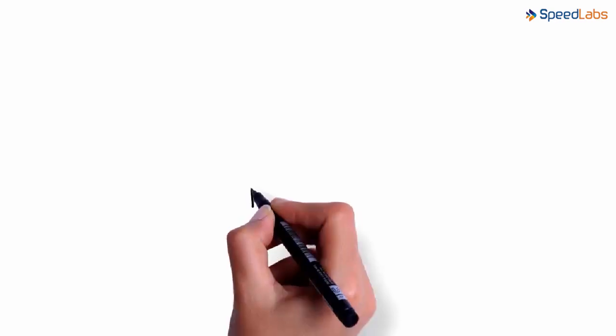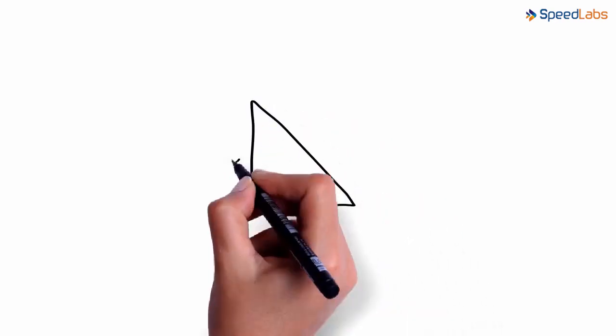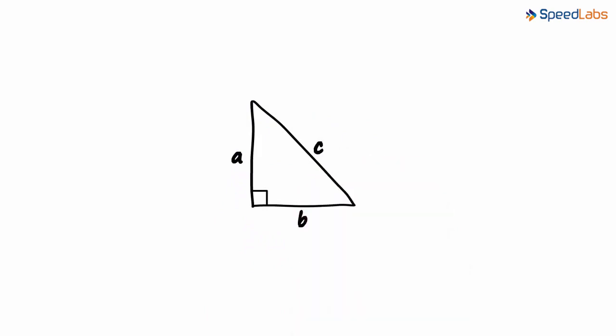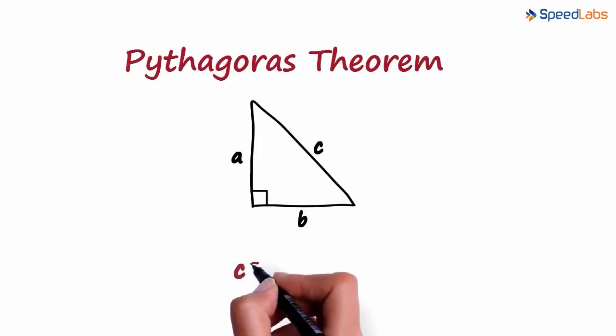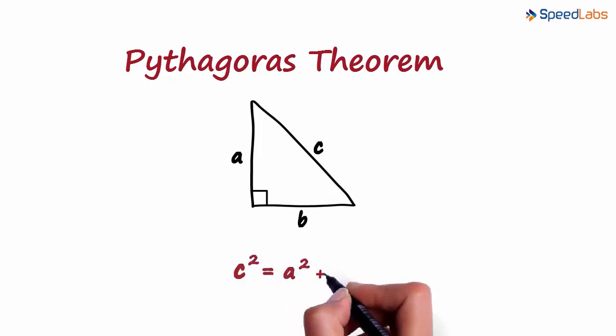In the previous video, we saw that if we have a right angle triangle like this, with sides a, b, and c, then the Pythagoras theorem says that c² will equal a² plus b².